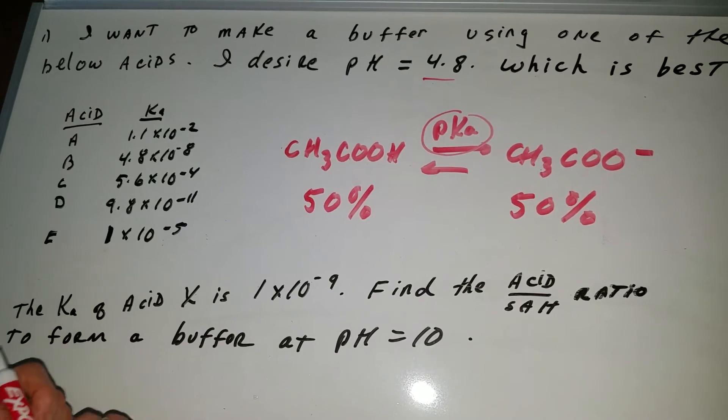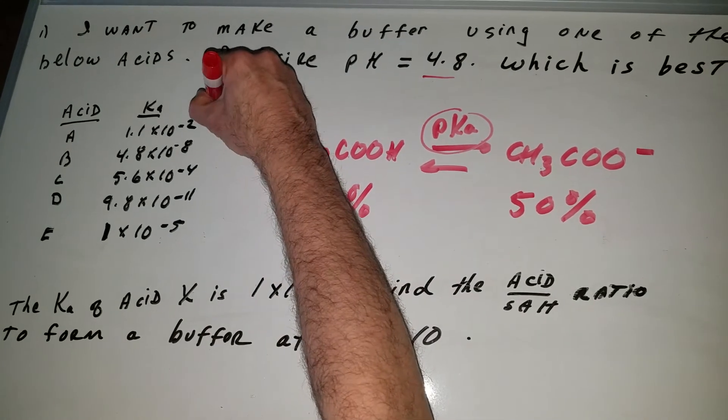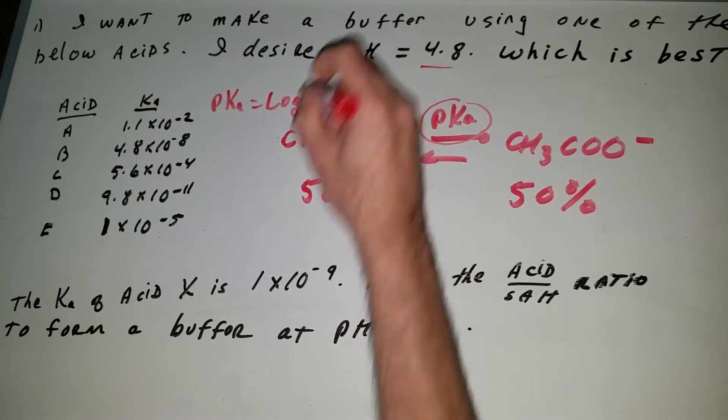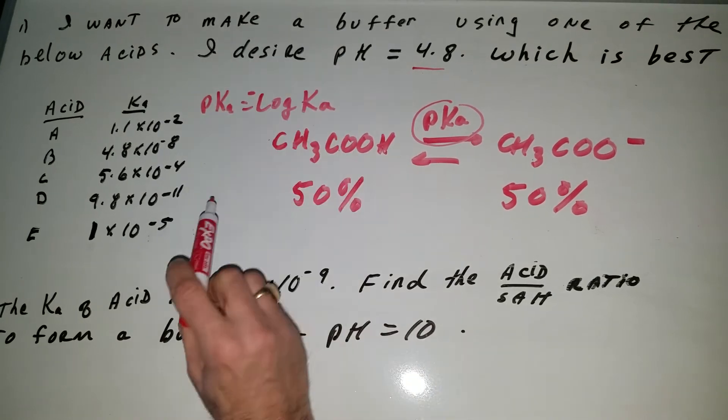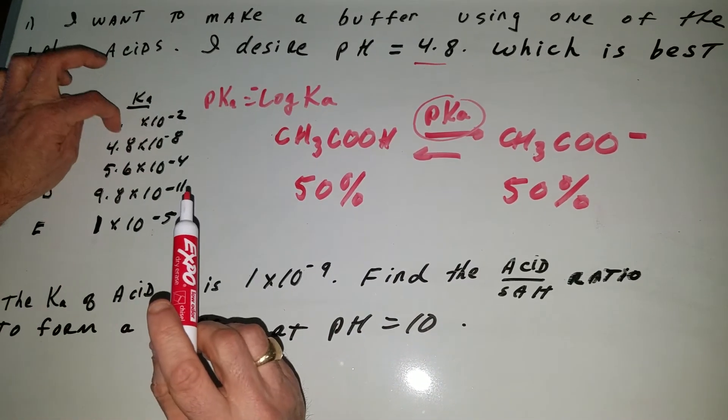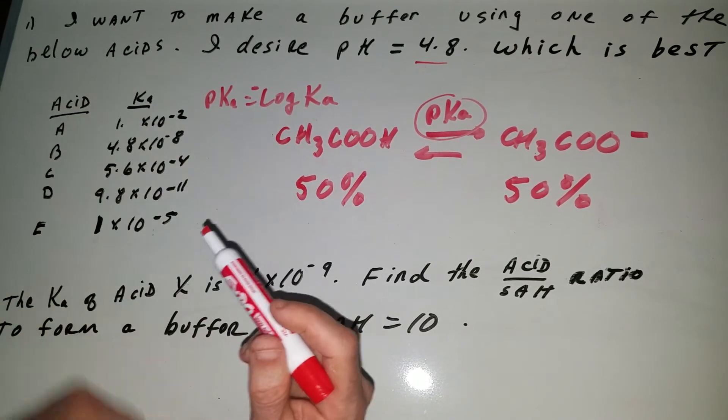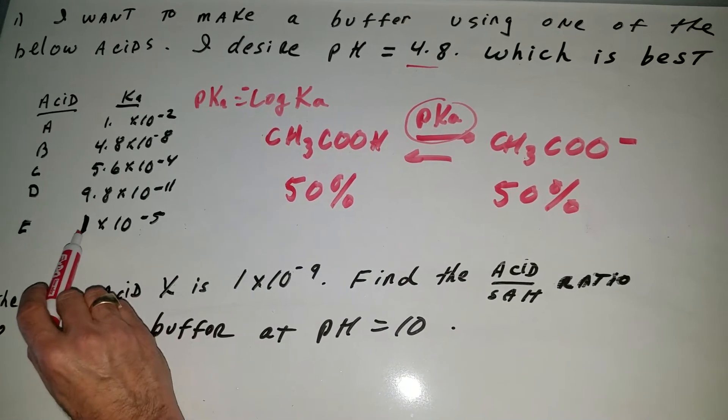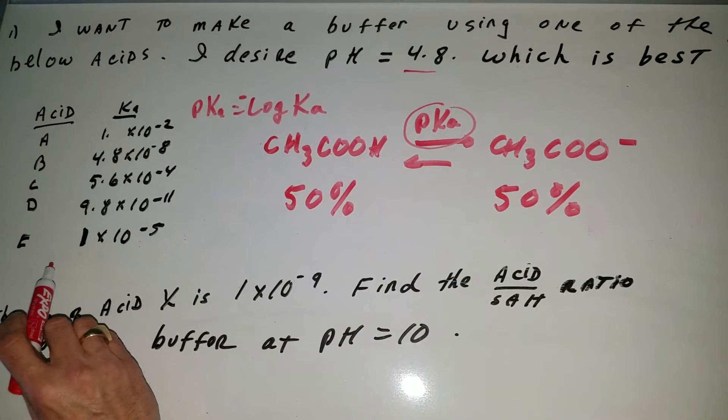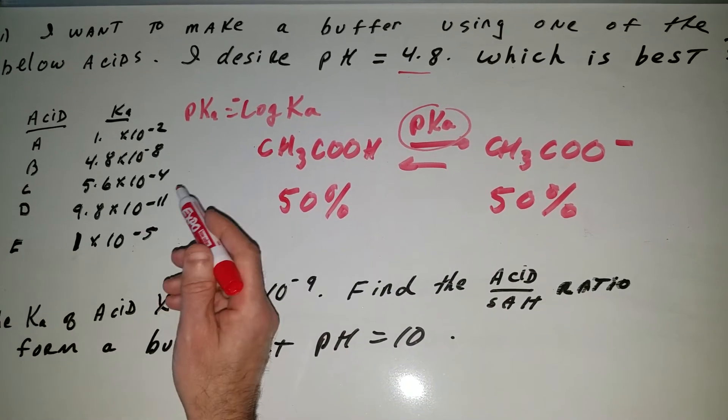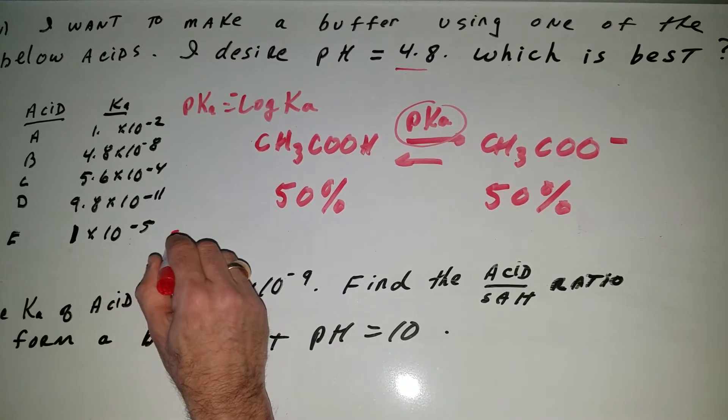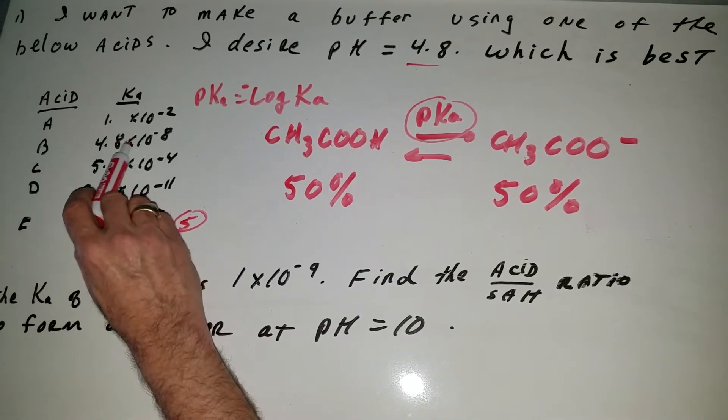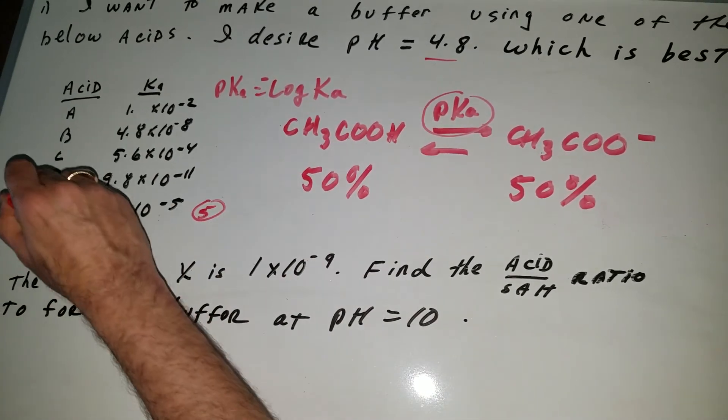Well if you go to the first one you get 1.1 times 10 to the minus 2. Now we know that the pKa is minus the log of the Ka. So if you minus the log of 1, forget the 1.1, if it was just 1 times 10 to the minus 2, the answer would be 2 and that's not even close to 4.8. If you look at choice E at 1 times 10 to the minus 5, if you took the negative log of that, minus the log of 1 times 10 to the minus 5, that would be exactly 5 and as you can see 4.8 is very close to that.